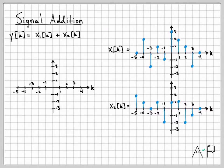Let's just start at the most negative time that we have a non-zero value. That's time minus 5. So here at time minus 5, x1 has a value of 0 and x2 has a value of 2. So 0 plus 2 gives us a value of 2 at time minus 5 for y.